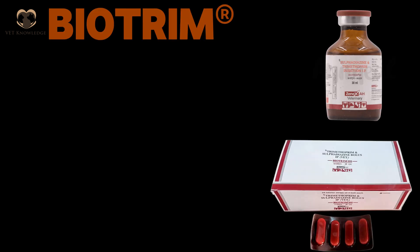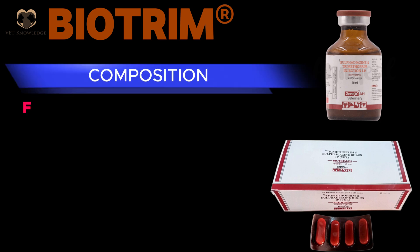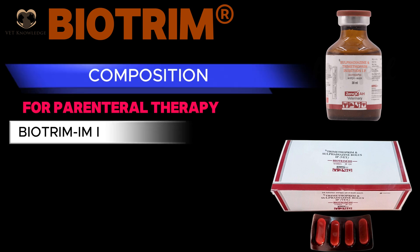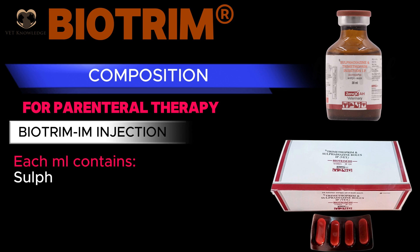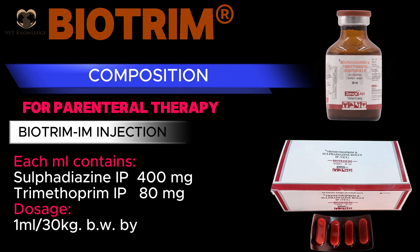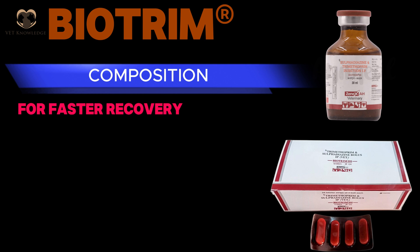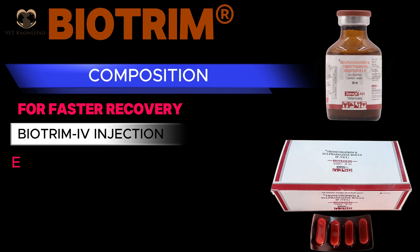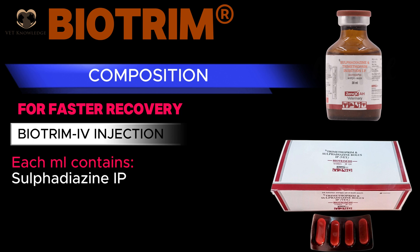Biotrim — composition for parenteral therapy: Biotrim M injection — each ml contains sulfadiazine IP 100 mg and trimethoprim IP 80 mg. Dosage: 1 ml per 30 kg body weight by deep IM route. For faster recovery: Biotrim V injection — each ml contains sulfadiazine IP 200 mg and trimethoprim IP 40 mg.